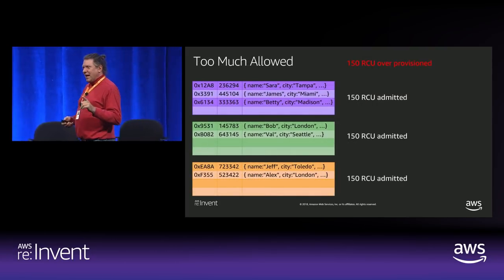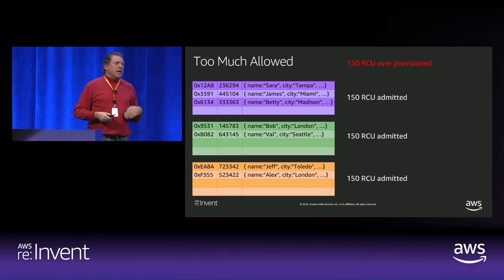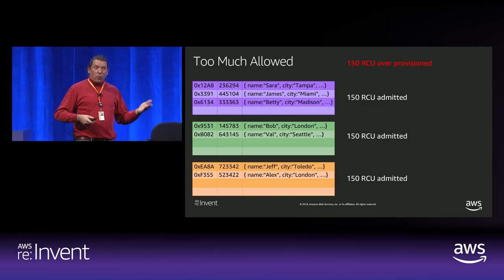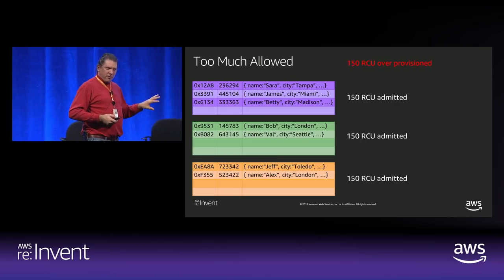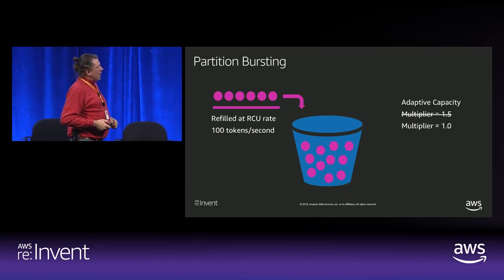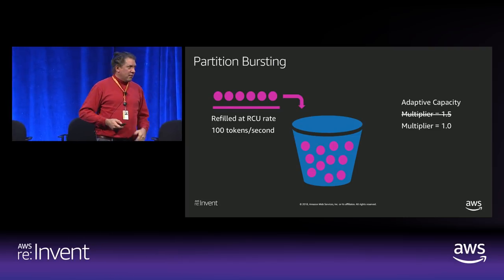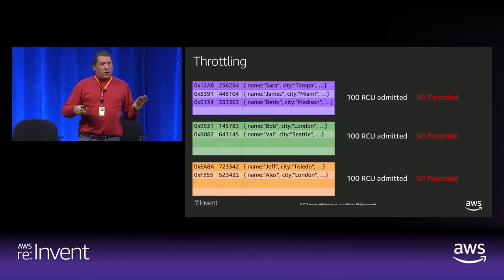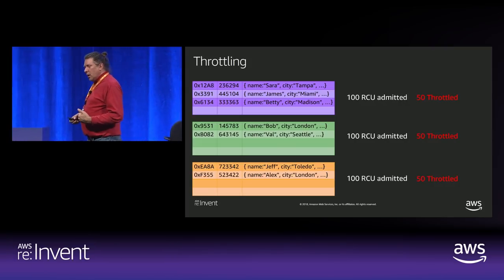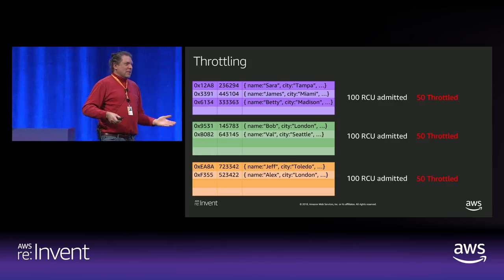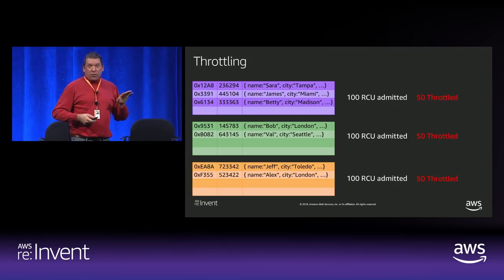You might think you can game the adaptive capacity multiplier. The PID controller will notice that your consumed capacity is above your provisioned capacity and bring the multiplier back down to one — eventually throttling you again. So adaptive capacity provides temporary relief but doesn't solve sustained over-provisioning.